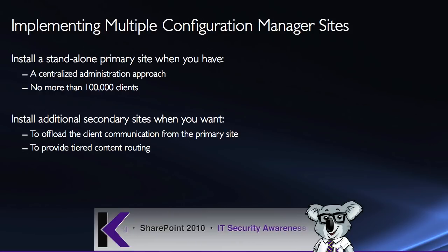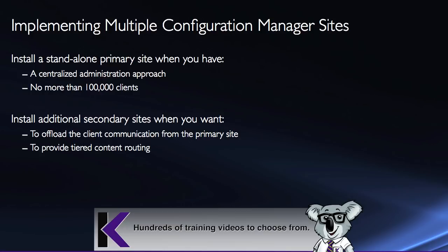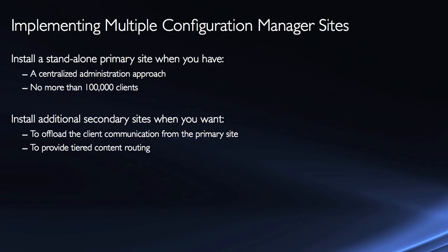Another thing to consider is whether we're dealing with more than 100,000 clients. As soon as you have more than 100,000 clients, you have to start dealing with multiple primary sites. You can install additional secondary sites when you want to offload the client communication from the primary site to a branch location — client communication being where the client itself connects into site servers. You may also need a secondary site for a more tiered content routing solution to give better control over bandwidth.